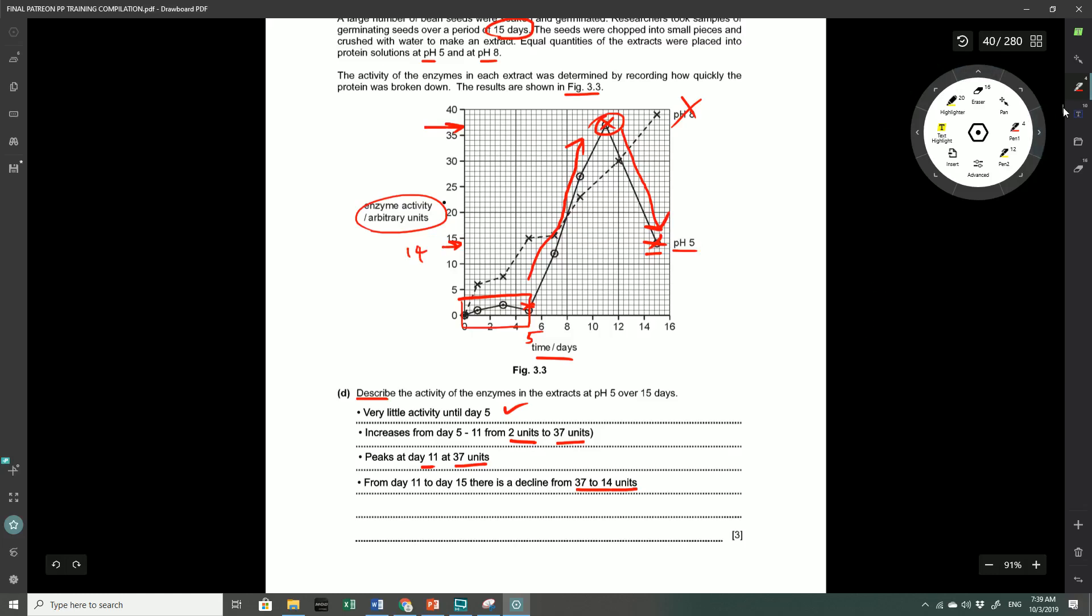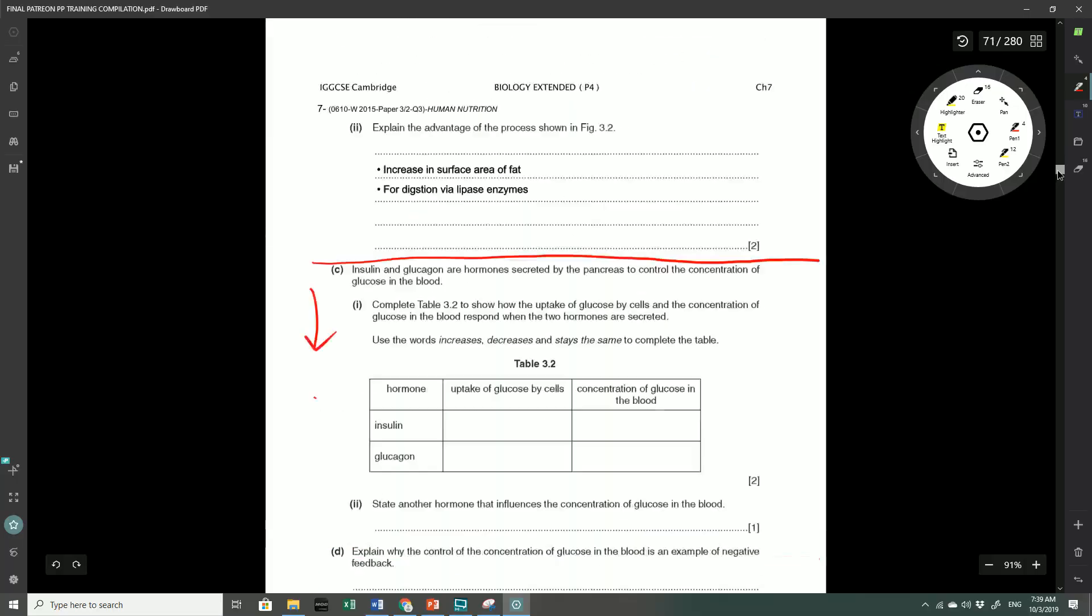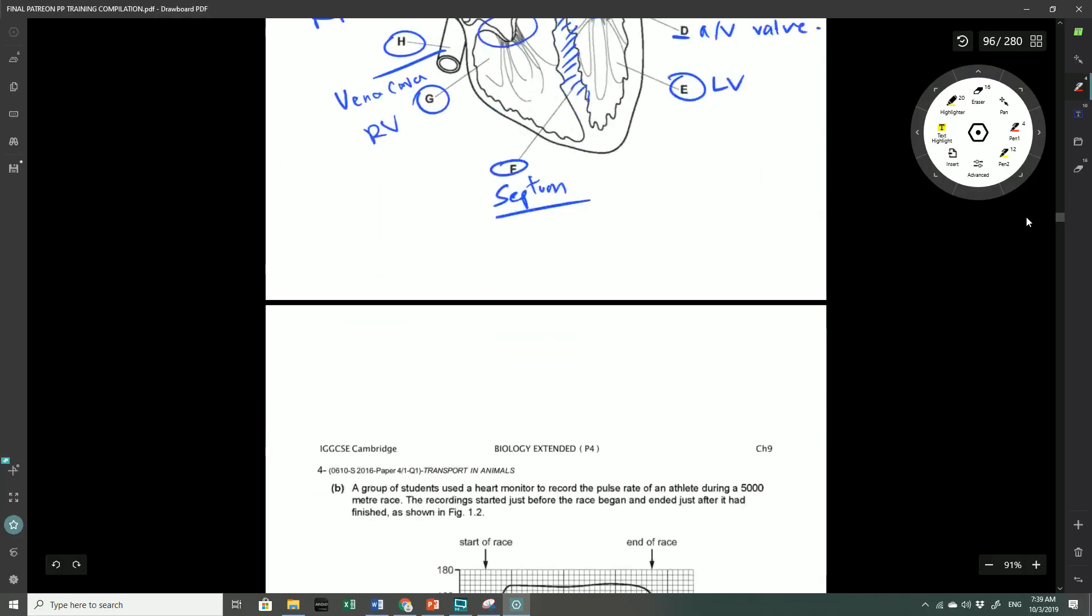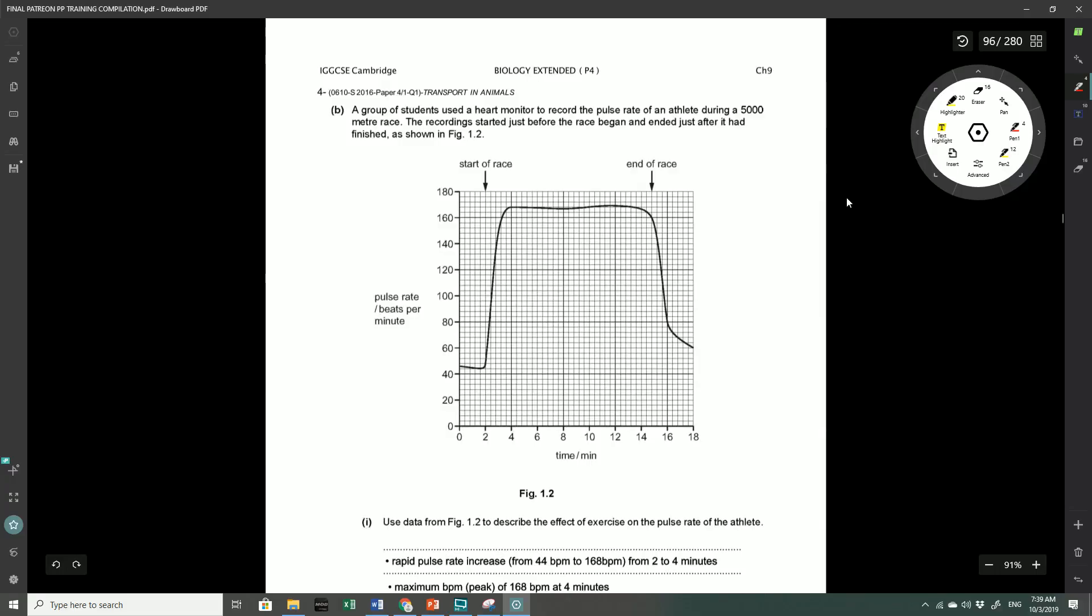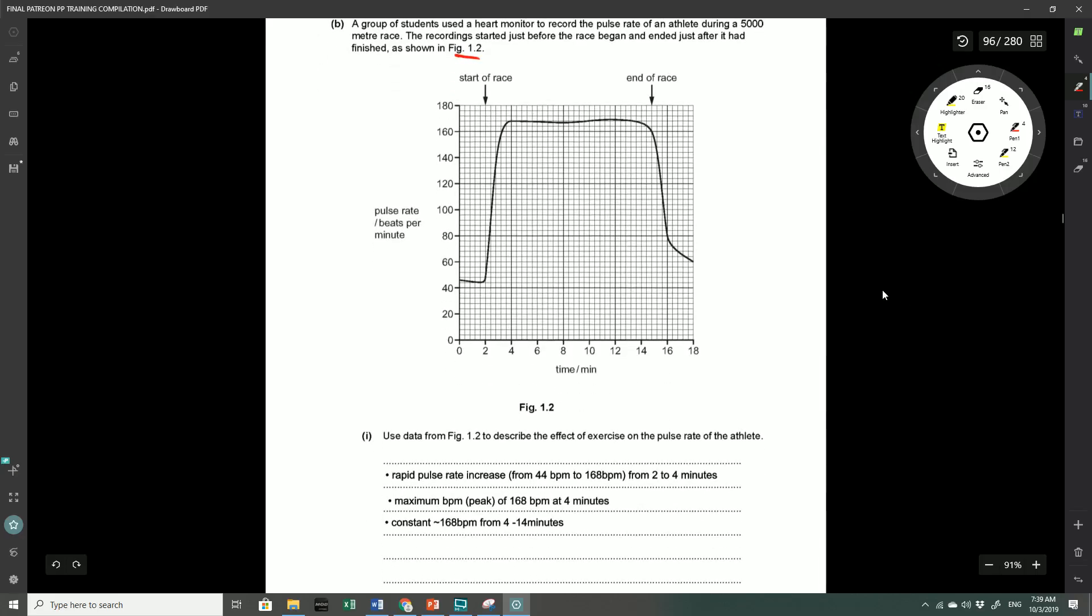If we take a look at another question on page 96, a group of students used a heart monitor to record the pulse rate of an athlete during a 5000 metre race. The recording started just before the race began and ended just after it had finished, as shown in figure 1.2. They ask you to use the data from figure 1.2 to describe the effect of exercise on pulse rate of the athlete. If we take a look at the overall graph, we can see that there is a very rapid increase because this is where the race starts.